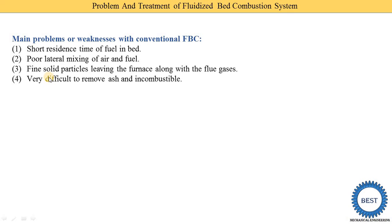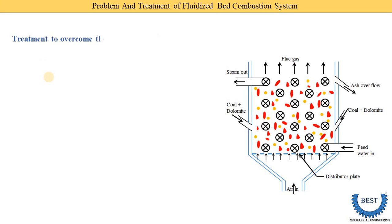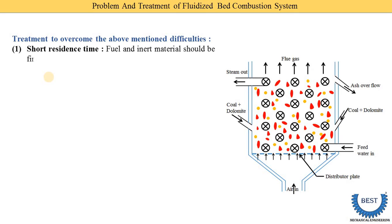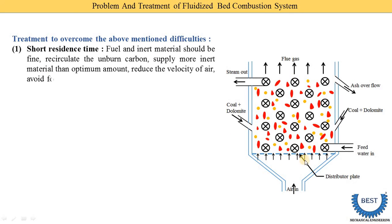Now we are discussing the solutions for these four problems. The first problem is short residence time — the coal and dolomite are staying for a short time. If we need to increase this time for the fuels and dolomite, then we need to take certain actions.